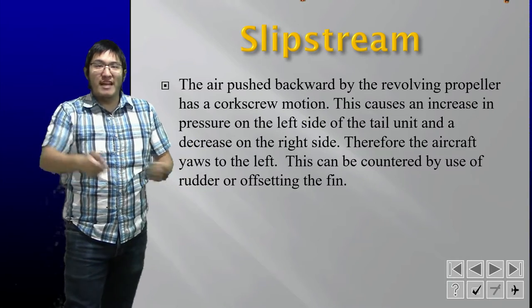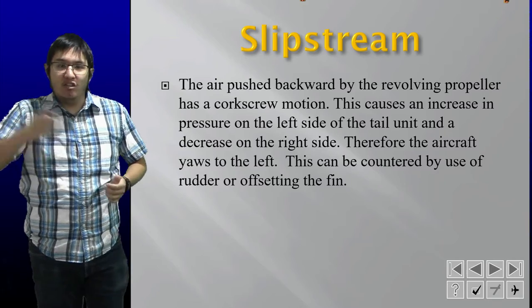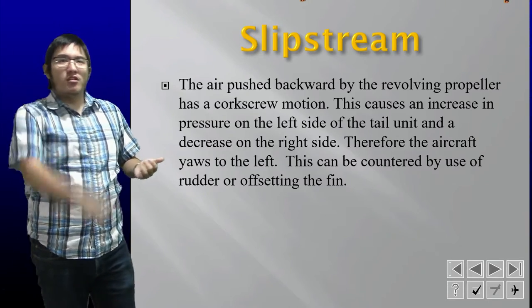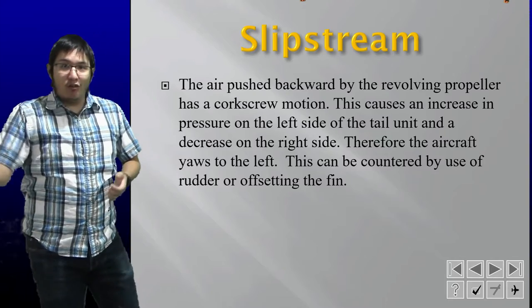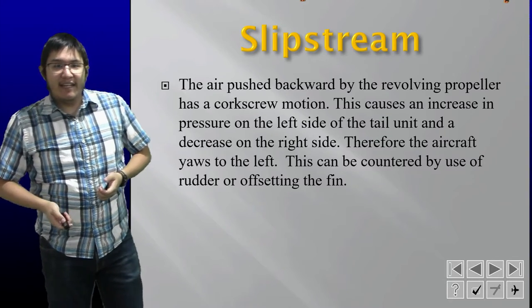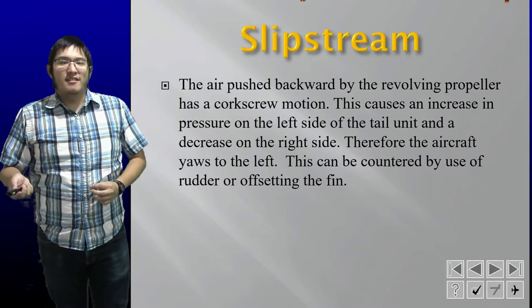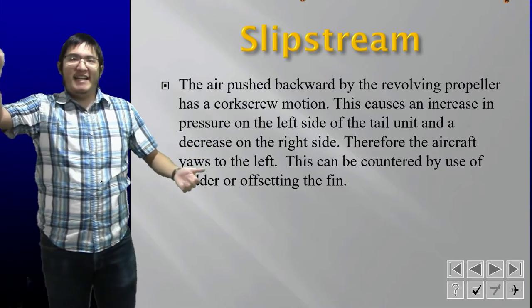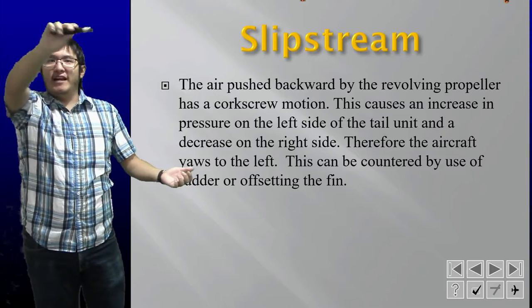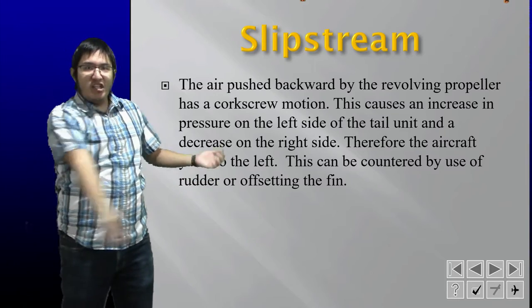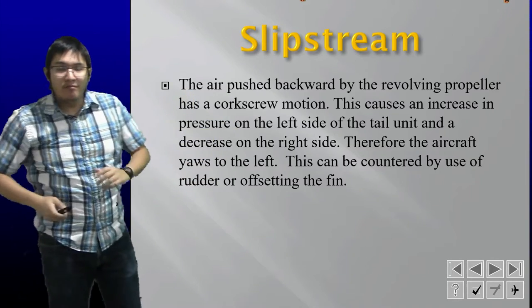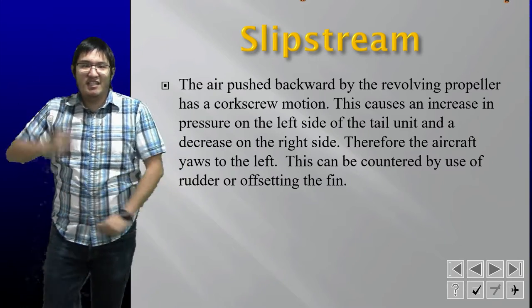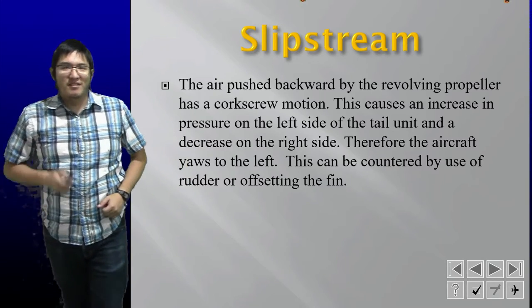There are more ways that yaw can occur — the slipstream, for example. When air is pushed back by the revolving propeller, it travels in a corkscrew motion following the propeller. This corkscrew motion creates increased pressure on the left side of the tail, causing the aircraft to yaw to the left. Again, counter this with right rudder.